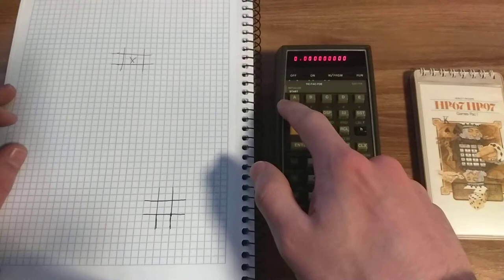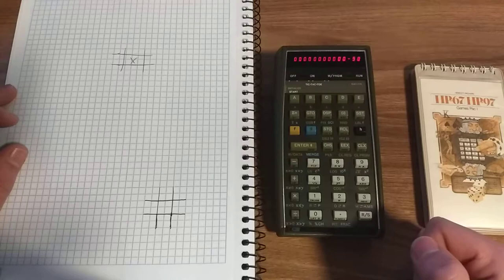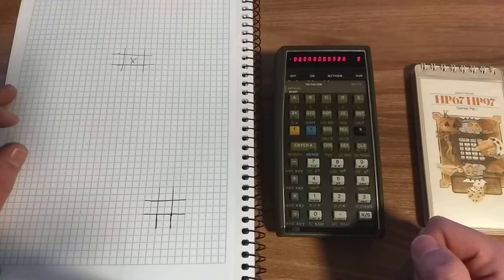The game is initialized, and then you start by pressing A. It flashes a little bit as the calculator begins its move. The calculator always starts the game.